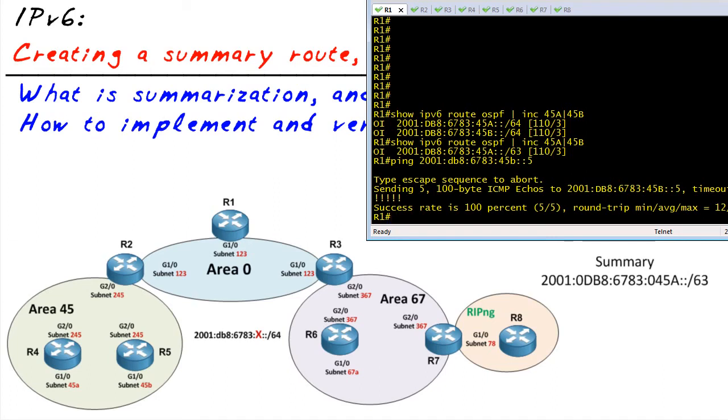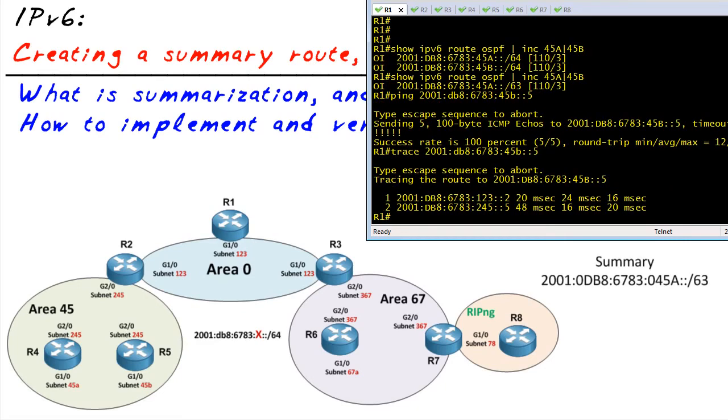We can also verify that with a trace. We can do a trace to that same address, and that'll help us verify the path: it's going from R1 to R2 to R5, going down to that device. So R1 is sourcing it, and it's going to R2 and R5. That's indicative of the IP addressing scheme I'm using.